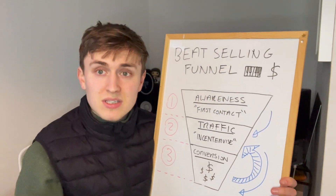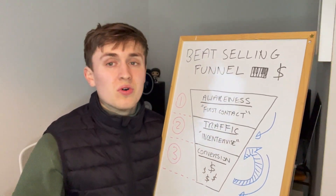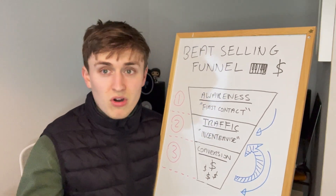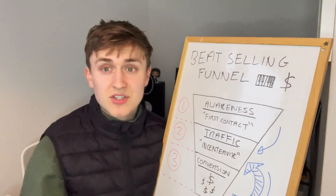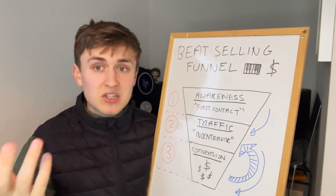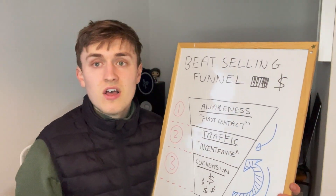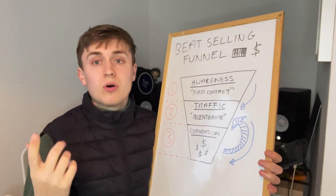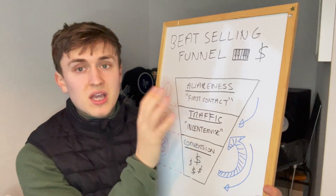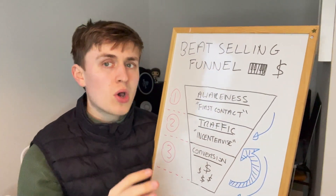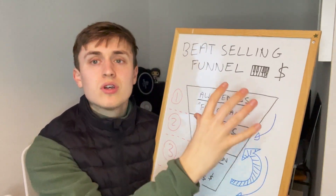The first tier is awareness, which applies to any form of reaching out to artists or advertising to get emails. To grow an email marketing list you need emails and ways to collect them. The best ways I've found are searching artists on Instagram, Facebook, SoundCloud, and YouTube to extract their email address, or allowing beats to be downloaded for free on BeatStars in exchange for an email capture.